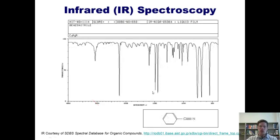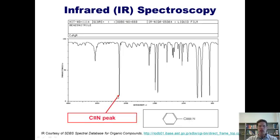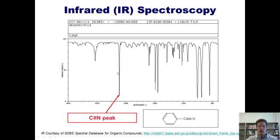The last functional group I want to show you is a nitrile — benzonitrile, with a C-triple-N bond. Where does that show up? Right here at 2200. This is one of the few things that shows up between 3000 and 1700 in the IR spectrum — right around 2200, give or take a little.